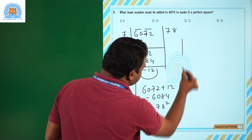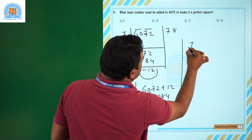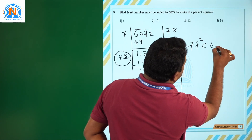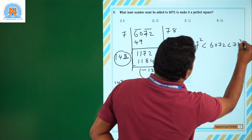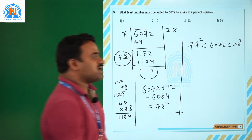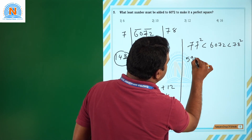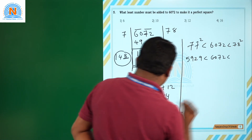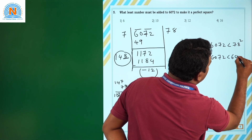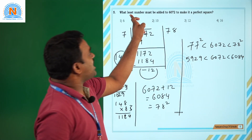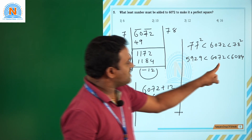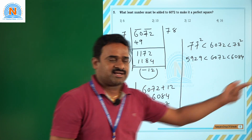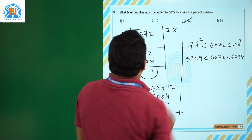There is another method: 6072 lies between 77² = 5929 and 78² = 6084. Since we need to add (not subtract), the next perfect square above 6072 is 6084, so 6084 − 6072 = 12 must be added. Our answer is 12.